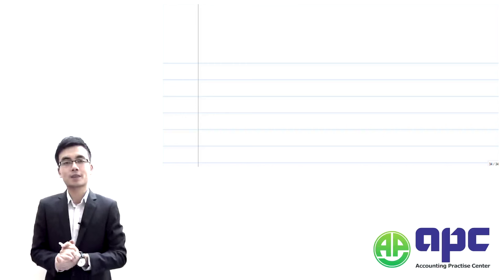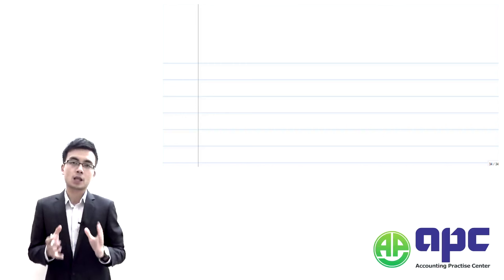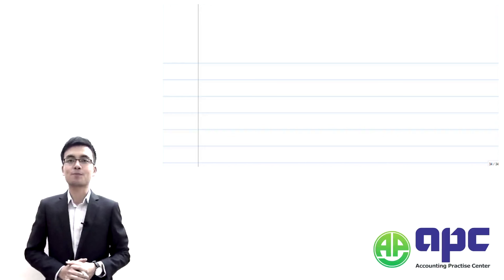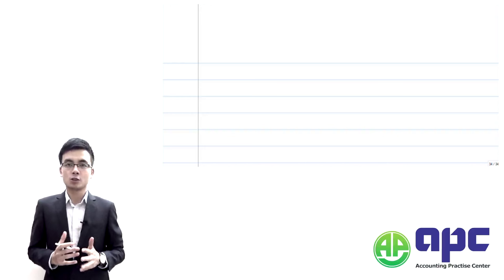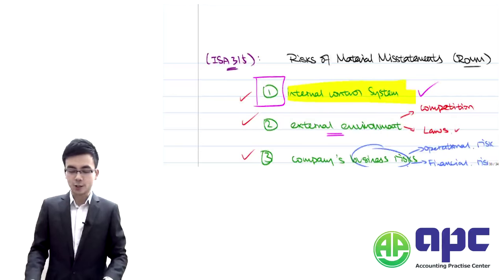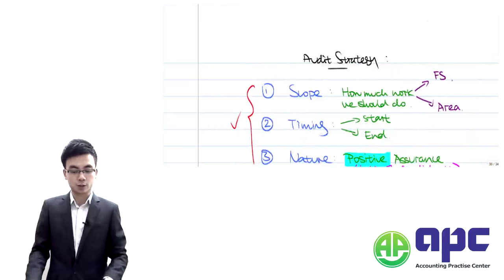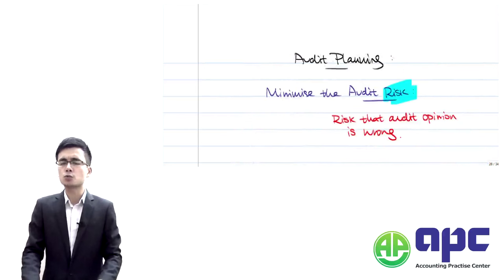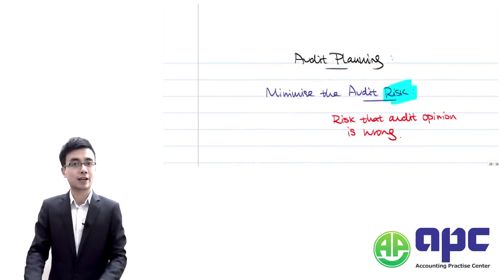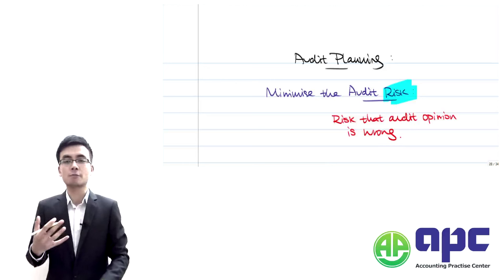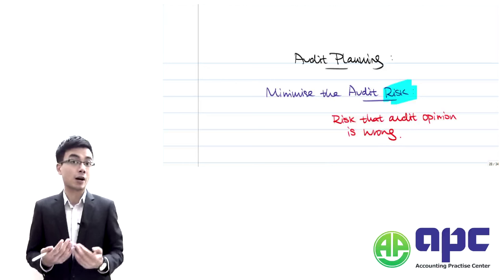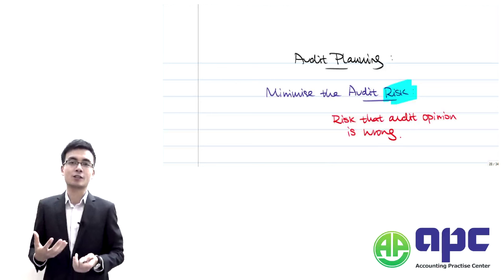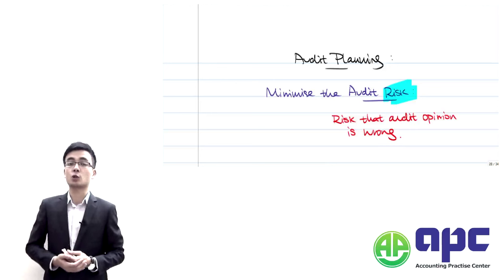Welcome back. Let's look at how we set up the audit strategy. We are still at stage number 2 of the audit, where we're going to plan our audit carefully in case something goes wrong. Our aim is to minimise the audit risks before we give the audit opinion.